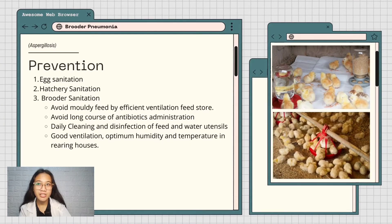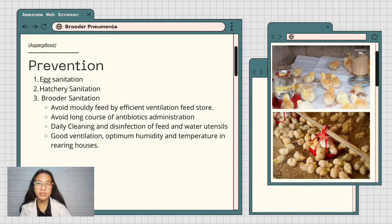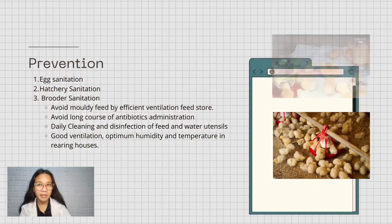Under brooder sanitation: avoid mold in feed by efficient ventilation of feed stores, avoid long courses of antibiotic administration, daily cleaning and disinfection of feed and water utensils, and maintain good ventilation, optimum humidity, and temperature in rearing houses.